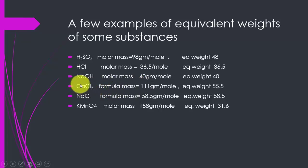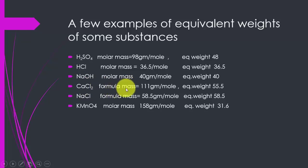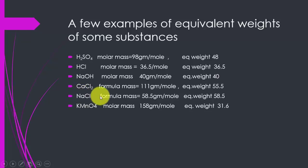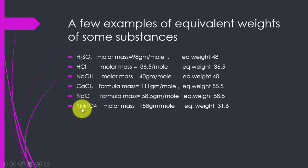In the case of salts, equivalent weight is equal to formula mass divided by the number of positive charges of the metal. For calcium, we have a +2 charge, so 111 divided by 2 gives 55.5. For NaCl, sodium has a +1 charge, so it is divided by 1 and the equivalent weight remains the same as the formula mass.